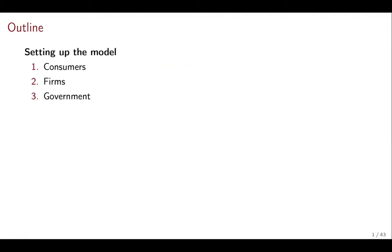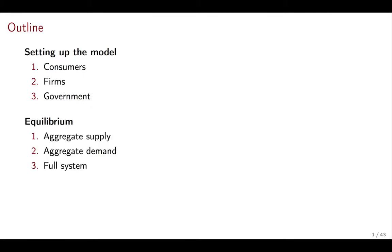We're going to be focusing on three steps. First we're going to be setting up the model — how consumers behave, how firms behave, and how the government behaves. Then we're going to take all of these behaviors together and talk about the equilibrium of the model: where the aggregate supply of goods comes from, where the aggregate demand for goods comes from, and then study the full system to characterize the equilibrium of the economy. In the final part we're going to go through the example of a shock — a change in the productivity or TFP of the economy — and see how that affects the different people that inhabit the economy.